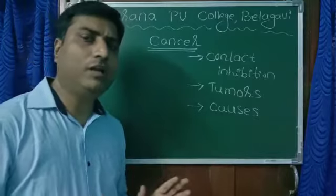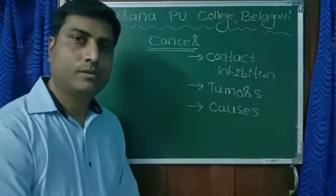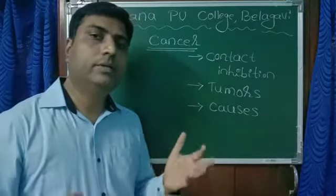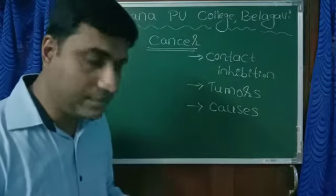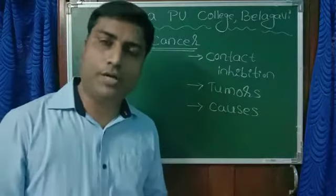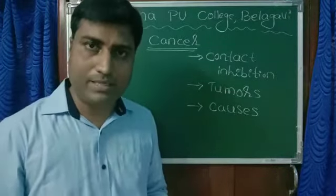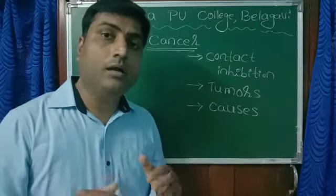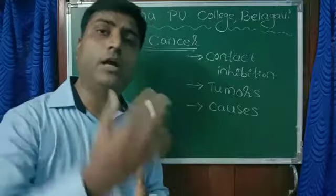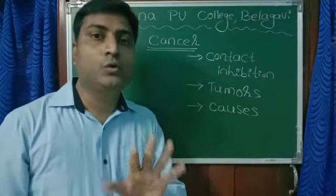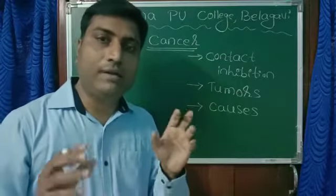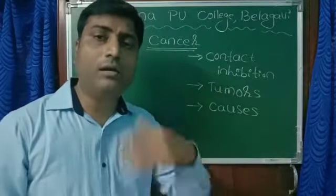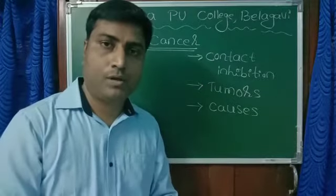Next we will move on to a dreadful, dangerous disease called cancer. We know that in our body cells divide and multiply, and this is necessary — only when cells divide does the growth of the body take place and replacement of worn-out cells occur. But sometimes cells divide in an uncontrolled manner, beyond control, and when this happens it leads to the disease called cancer. The exact definition of cancer is: unlimited or uncontrolled division of cells.